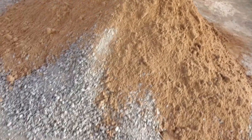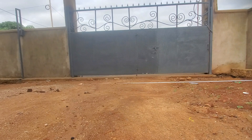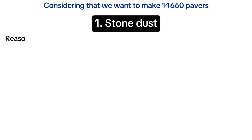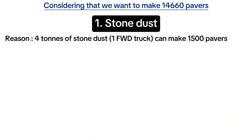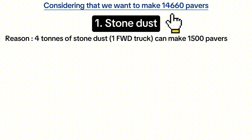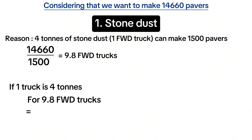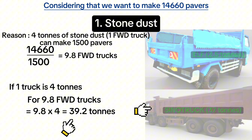The information I'm going to share with you is experience-based, tested and trusted, and also study-driven. Using an example of an outdoor space that needed 14,660 pavers: four tons of stone dust can make 1,500 pavers. One forward truck has a loading capacity of four tons and is enough to make 1,500 pavers. Therefore, for 14,660 pavers: 14,660 divided by 1,500 gives 9.8 forward trucks, which equals 9.8 multiplied by four tons to get 39.2 tons of stone dust.